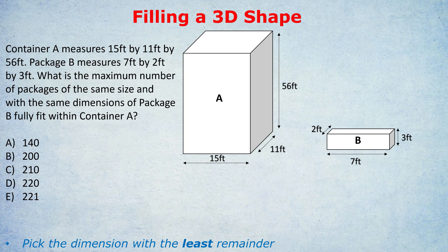What is the maximum number of packages of the same size and with the same dimensions of package B that can fully fit within container A? Now, some students who have paused the video and attempted this wouldn't get it right, even with the benefit of the last method, if they don't choose the dimensions carefully. Imagine if they just kept the boxes in the same orientation and said 15 divided by 7, 11 divided by 2, and 56 divided by 3. Just because that's the order in which the dimensions come for each box.